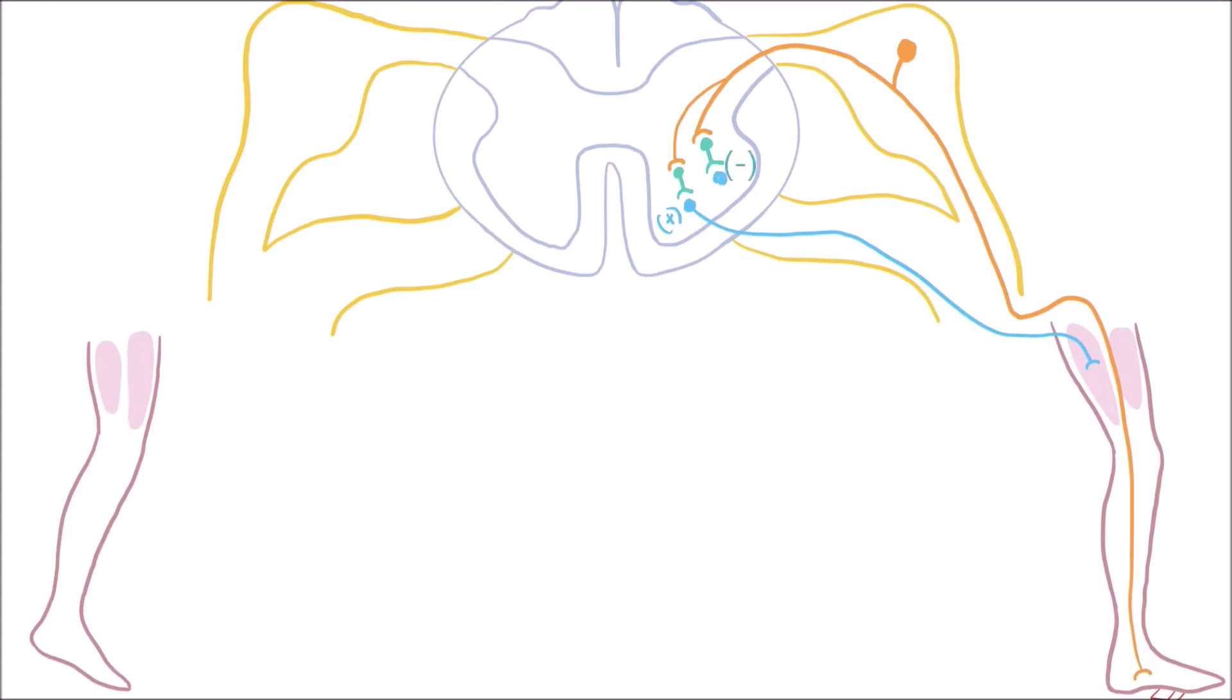The other interneuron inhibits an alpha motor neuron going to the extensor muscles, which causes them to relax. The simultaneous inhibition of the ipsilateral antagonistic muscles is called reciprocal inhibition.